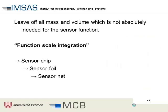How to get rid of it? I want to focus on those layers on top which really contribute to the sensor function - the bulk silicon does not in this case. That's the approach I call function-scale integration: leave off everything which is not really necessary for the sensor function. This brings me from a sensor chip to a sensor foil, and then to a sensor net. But of course this ballast has its reason - intelligent engineers make sensors with more mass than they need, and they have a reason to do it.